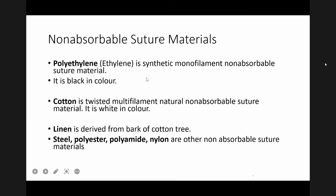Other non-absorbable suture materials include polyethylene, also known as Ethilon, which is a synthetic monofilament non-absorbable suture material that is black in color. Cotton is also a multifilament non-absorbable suture. Similarly, other non-absorbable sutures are linen, steel, polyester, polyamide, and nylon. Many materials have been tried and used as sutures.